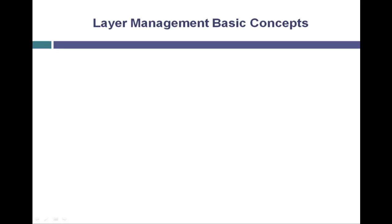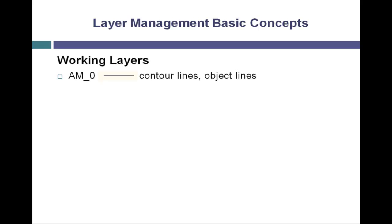Let's take a look at the default layer names and layer properties. First, let's look at the working layers. There are a series of layers whose names all begin by default with AM underscore and then a number. For instance, AM underscore zero. AM underscore zero is the layer intended for contour lines, also known as object lines. Its color is black or white depending on your background color, and it uses a continuous line type.